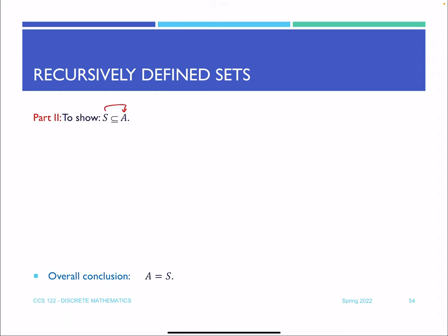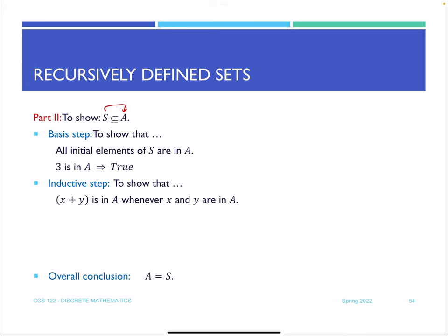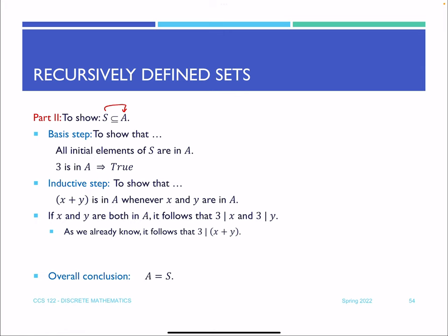For Part 2, we prove S ⊆ A using induction. The basis step: 3 ∈ A, which is true. For the inductive step, we show x+y ∈ A whenever x, y ∈ A. If x and y are both in A, then 3 divides x and 3 divides y, and we already know that if 3 divides x and 3 divides y then 3 also divides x+y. This completes the inductive step, concluding S ⊆ A. Combining Parts 1 and 2, A = S.